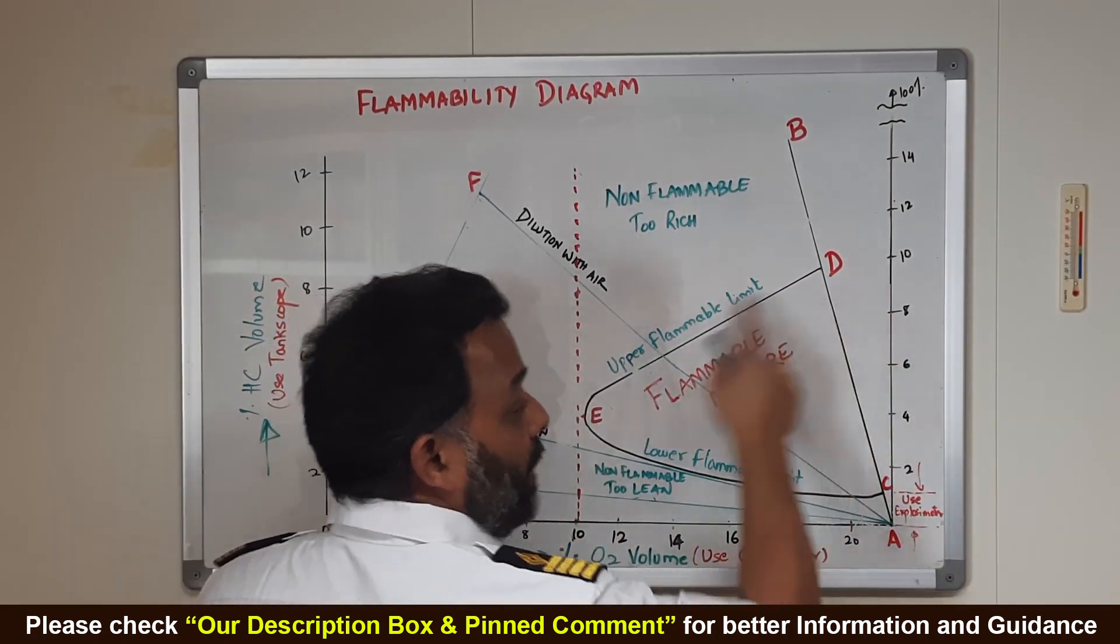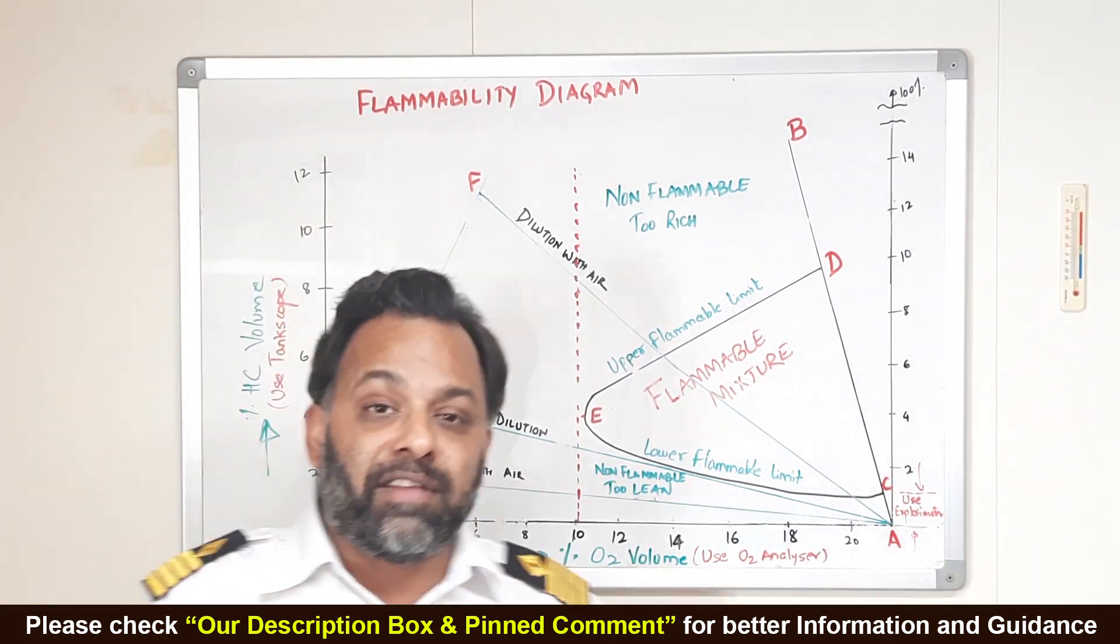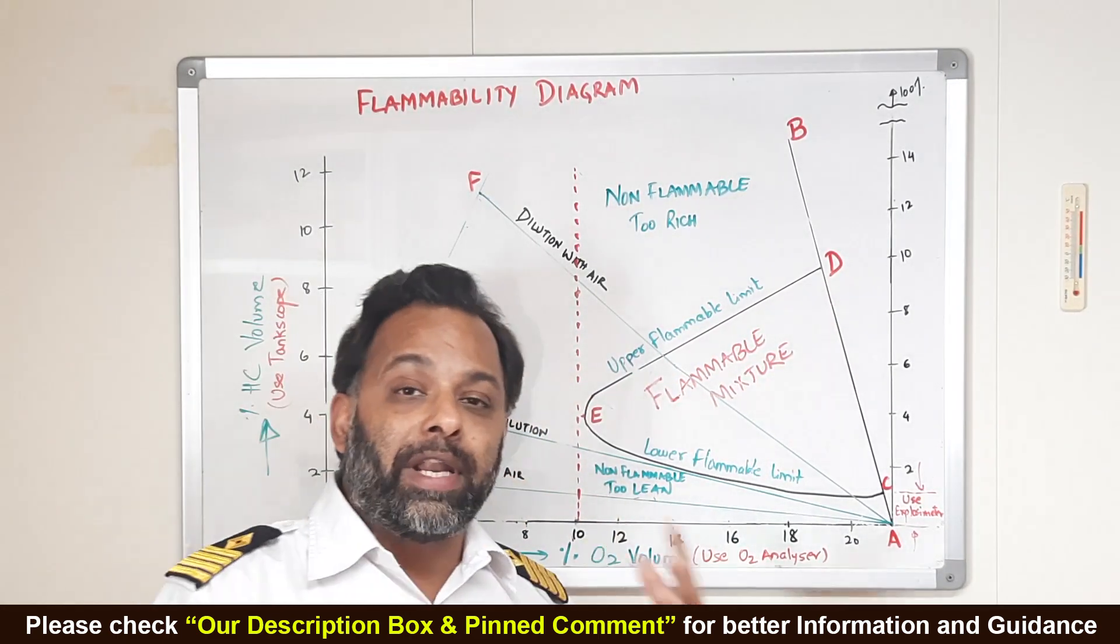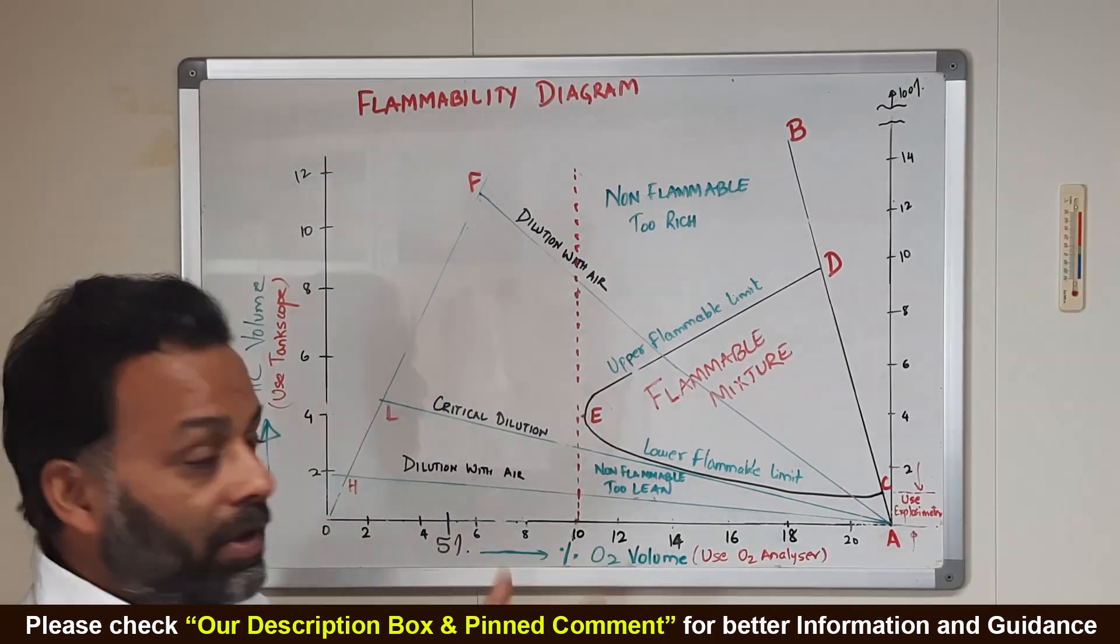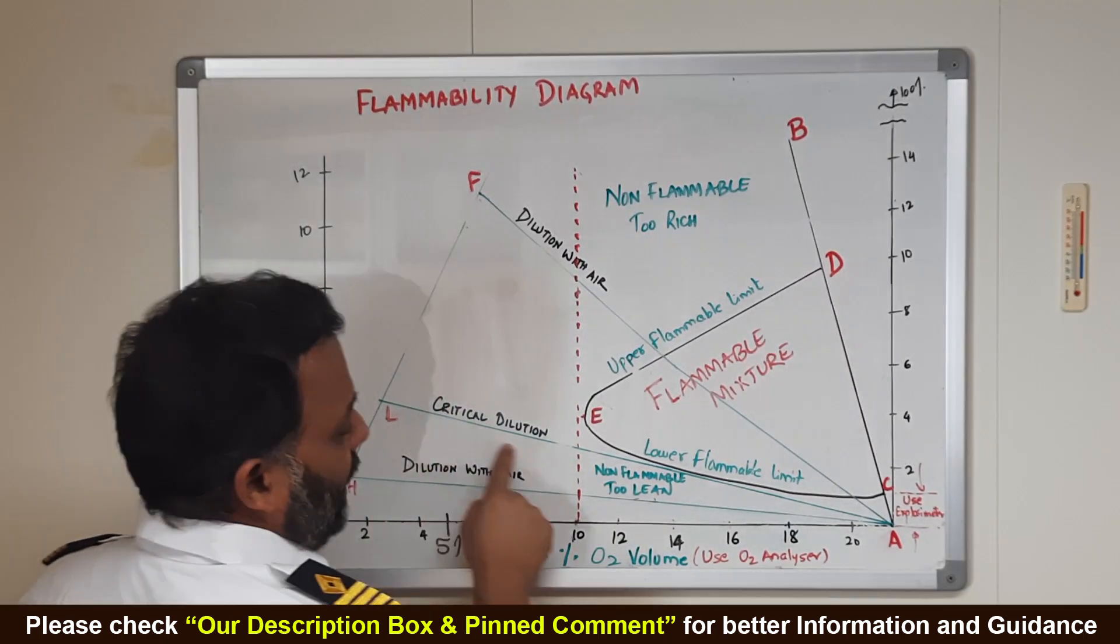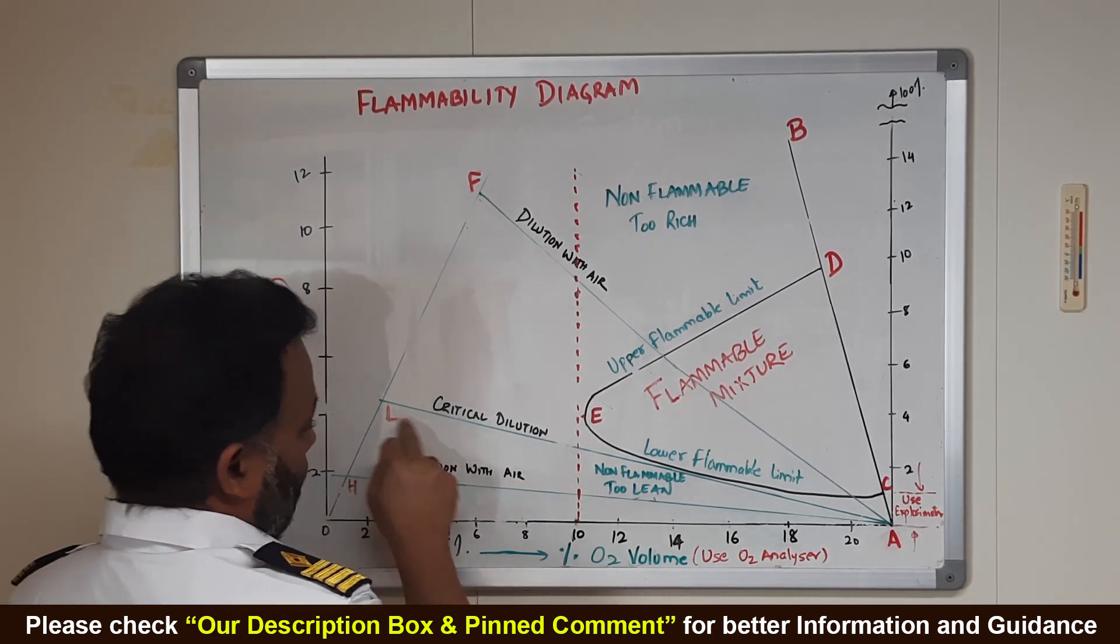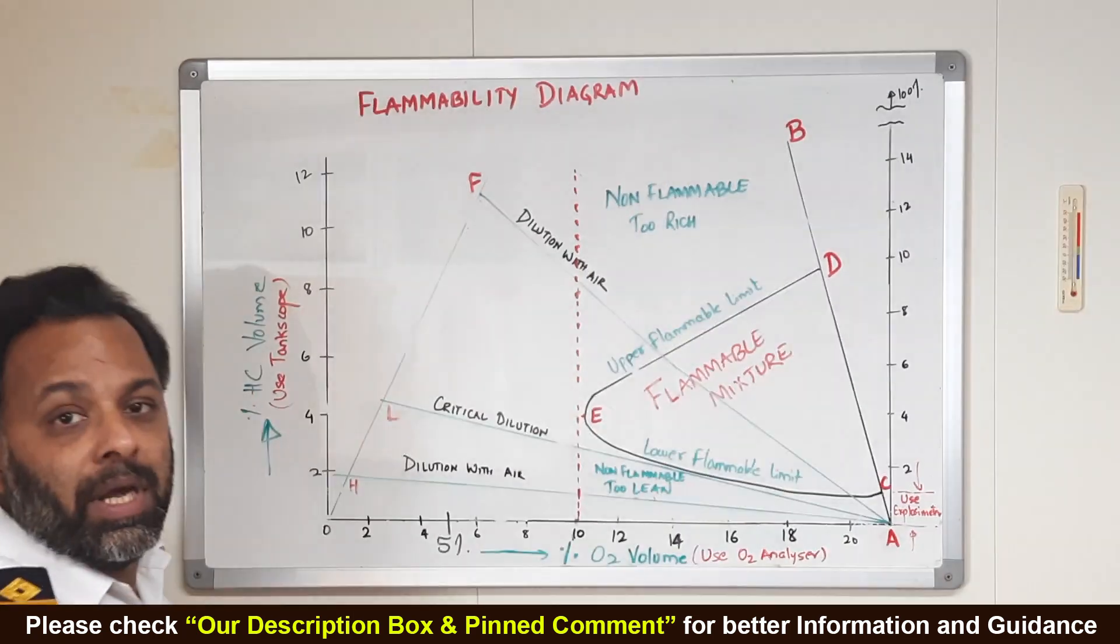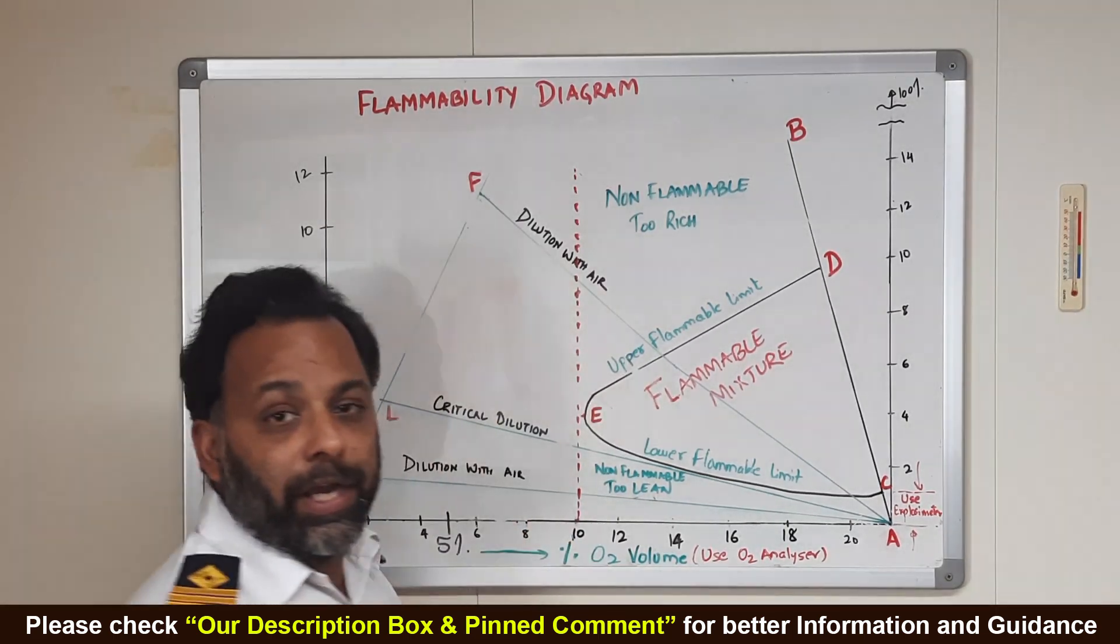So, flammability diagram tells us how to avoid this flammable mixture region so that we do not have any time where we go through this flammable mixture region. This is the critical dilution line, this is the maximum dilution of air which is just clear of this flammable region. But it is better to go further down as much as you can and then introduce air into the system.